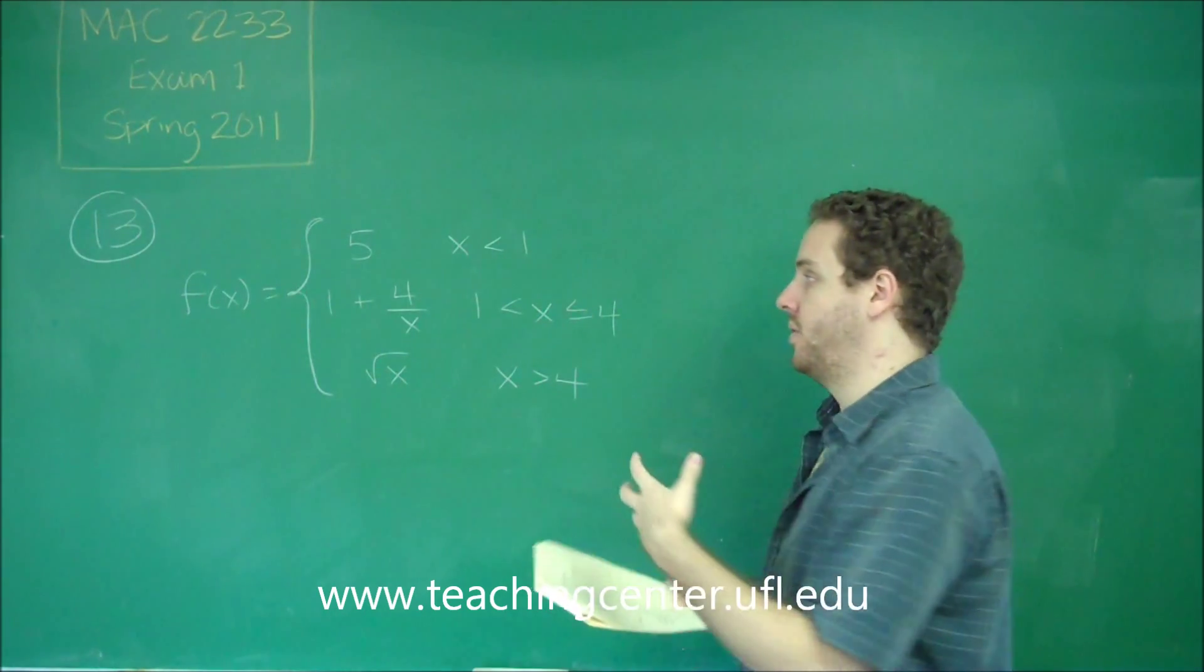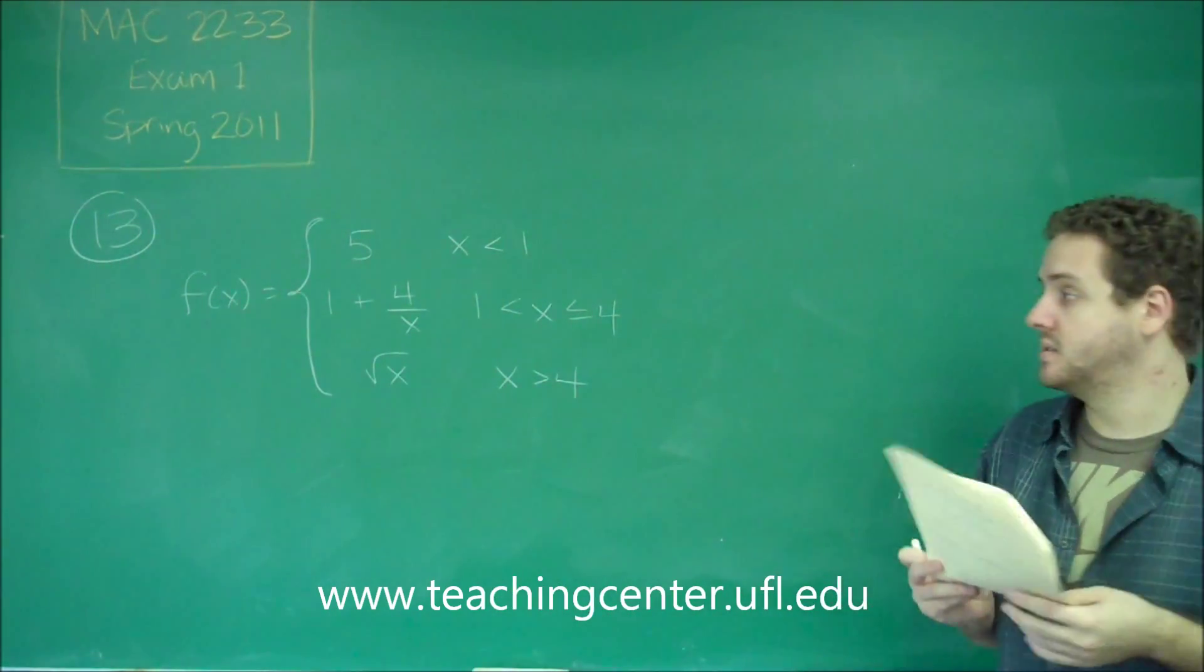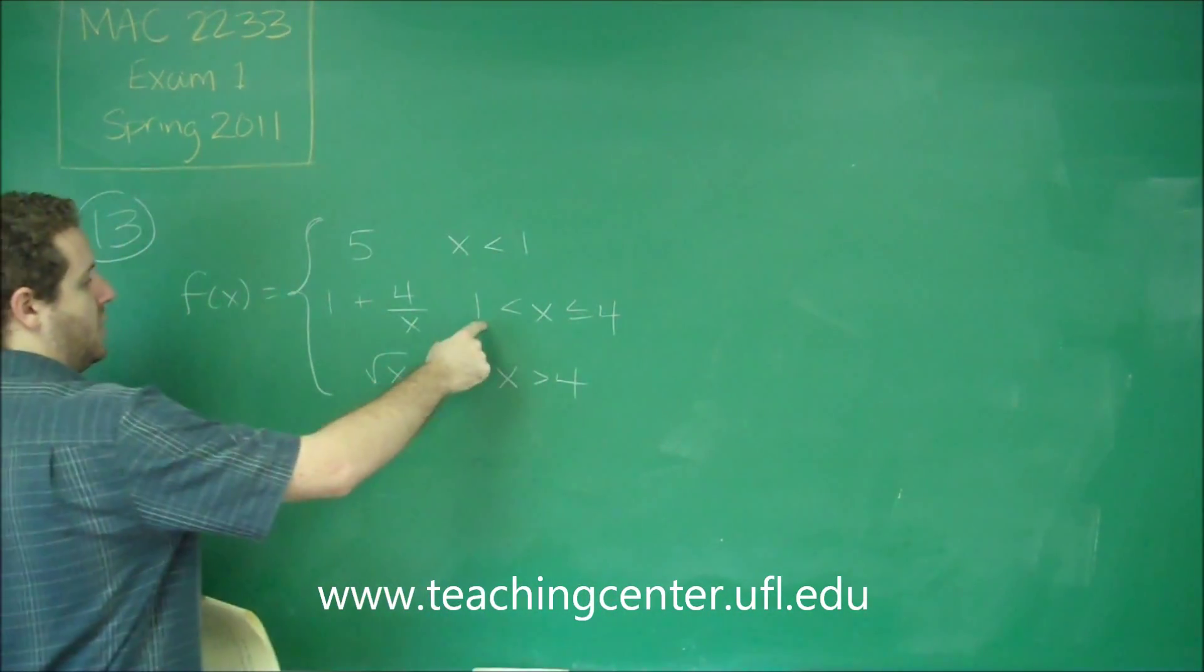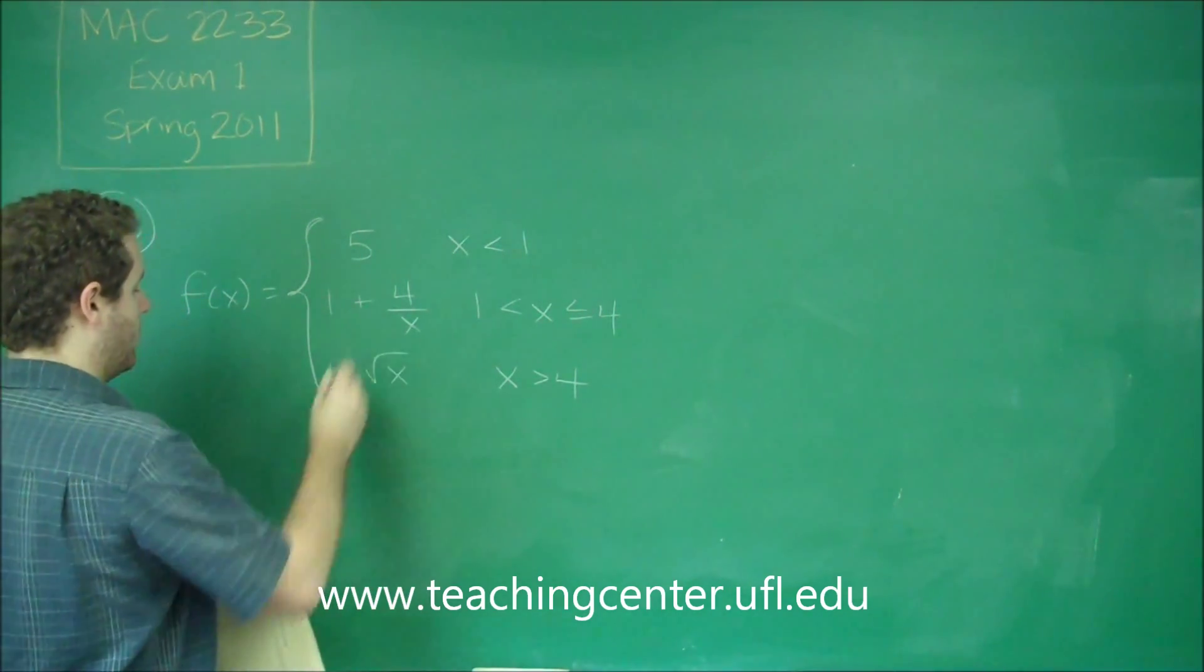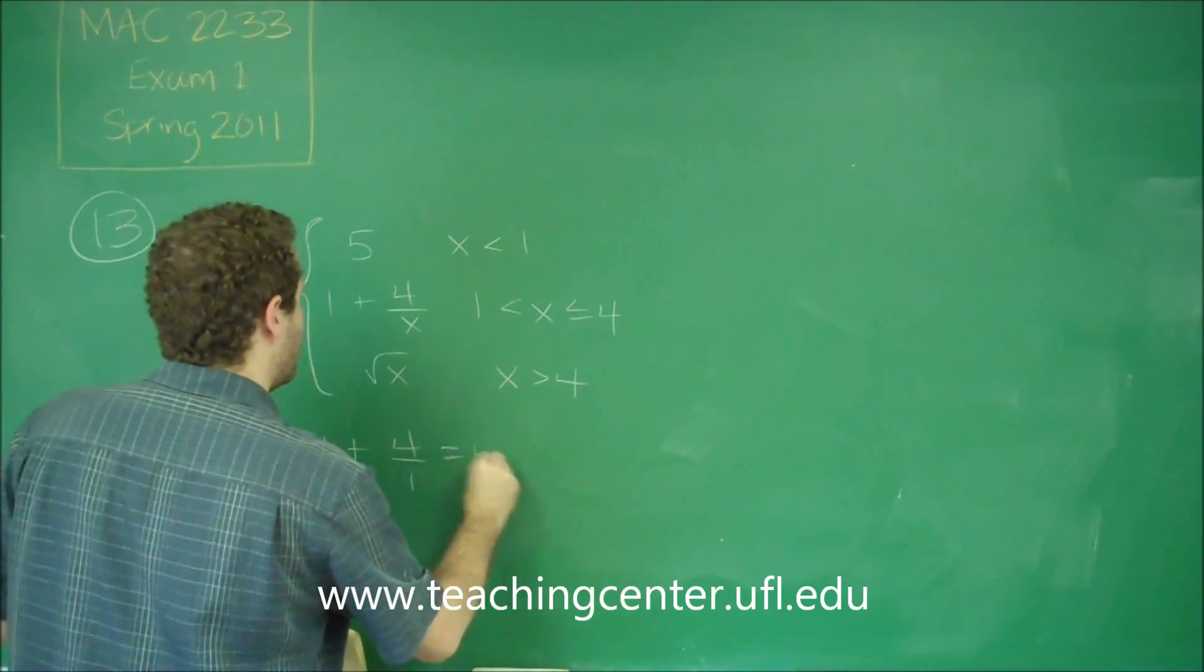Let's see if they have the same y value. Well, this one is certainly at 5, because that's what the function is. To figure out what y value this one comes at, well, it's at x equals 1 is the point we're talking about. If we plug 1 in there, we just get 1 plus 4, which is 5.